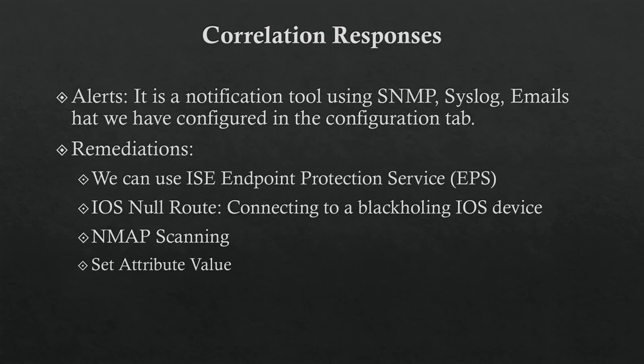Correlation responses include alerts and remediation. Alerts use notification tools like SNMP, syslog, and email. For remediation, you can use ISE endpoint remediation or an iOS null route — this works with an IOS router where you can send traffic when a violation occurs to block or perform an action.